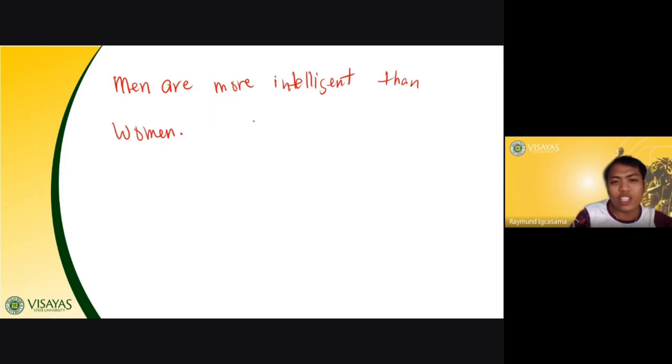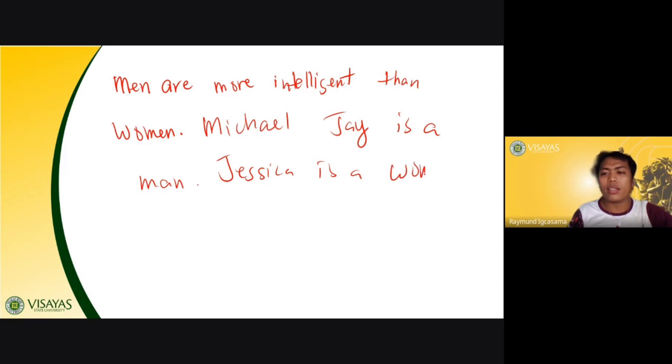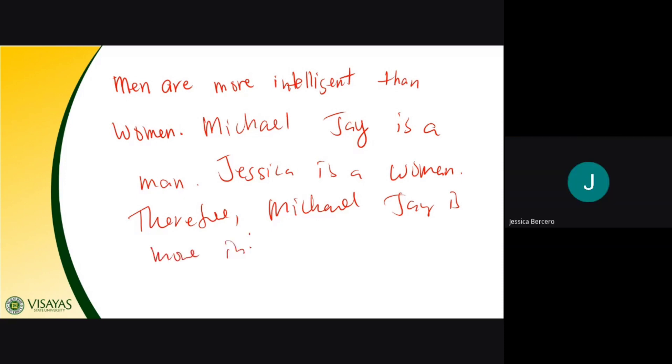Then, Michael J. is a man. Then, Jessica is a woman. Therefore, what would it be? Michael J. is more intelligent than Jessica. Than Jessica.